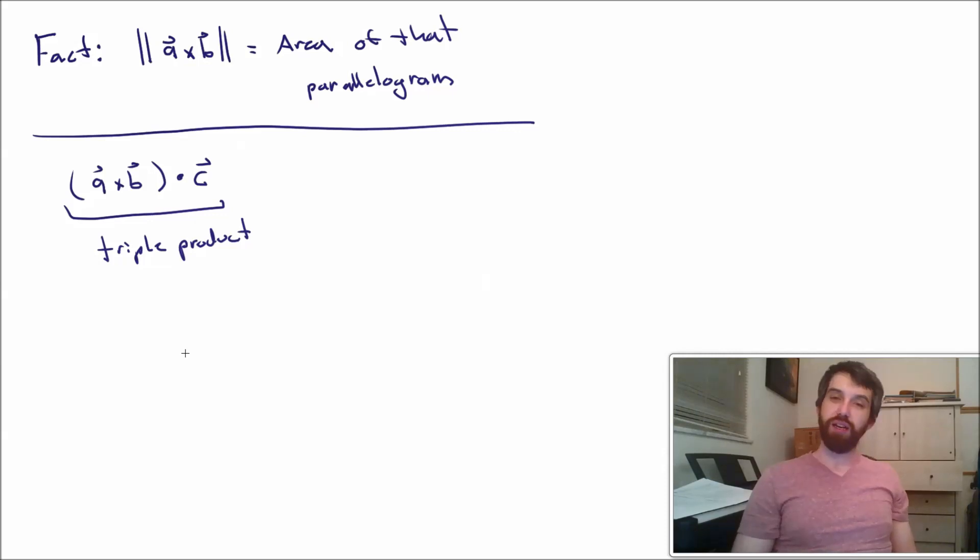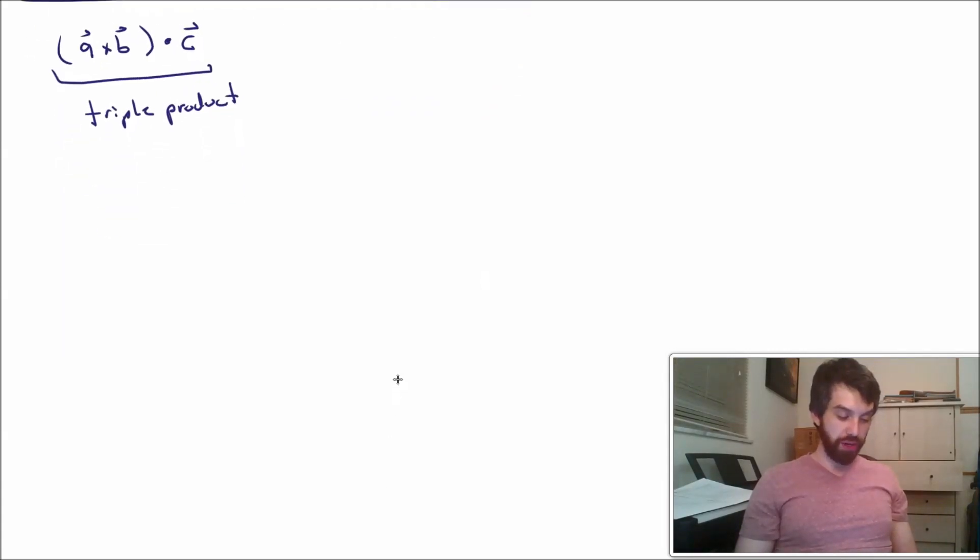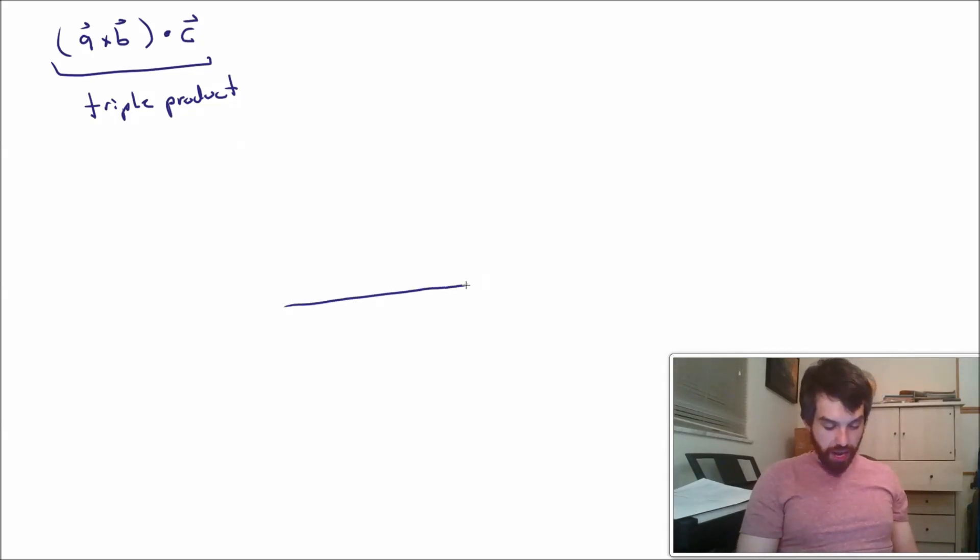So the question is, what does this thing mean? So, you know how we just defined a parallelogram? We can also define something called a parallelepiped. A parallelepiped is going to look like this. I'm going to have one vector and I'm going to call it A. I'm going to have a second vector and I'm going to call it B. And I'm going to try to draw this with a little bit of perspective. I'm going to have a third vector and I'm going to call it C.